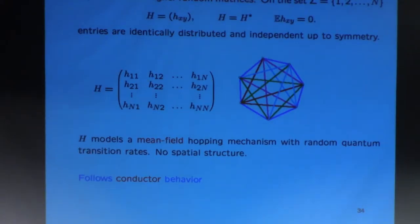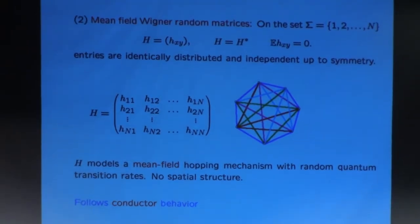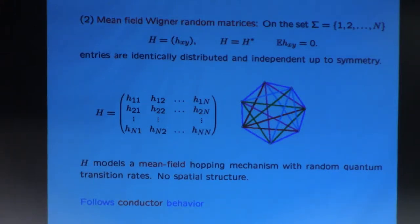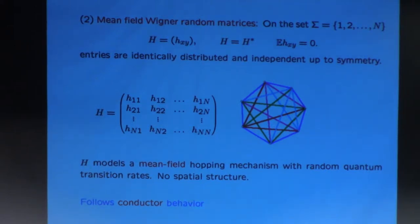The other typical model is what we are used to as the mean-field Wigner random matrices. This is exactly the opposite model from the random Schrödinger in some sense, because this is a fully mean-field model. In quantum mechanics, you should think of it such that if you have an N by N matrix, you can represent this matrix as being a Hamiltonian on a configuration space of N elements, N points. Here N equals 7, and the Hamiltonian operator is a matrix of the size of the configuration space.